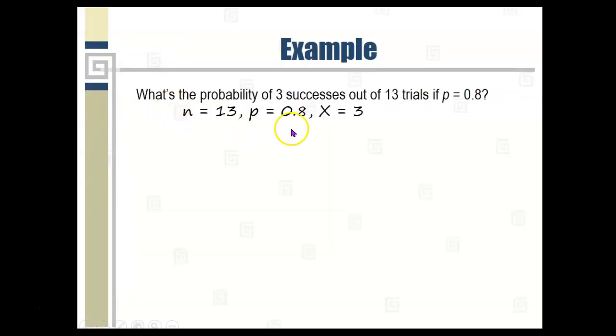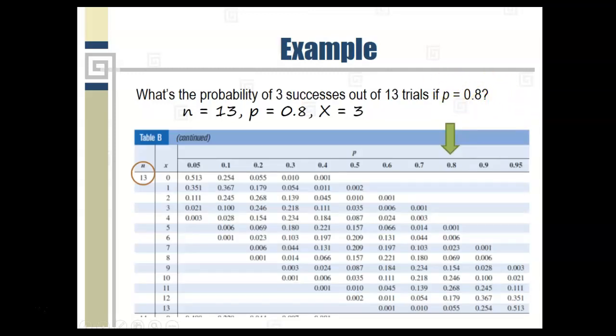Next question. What's the probability of three successes out of 13 trials if P is 0.8? Let's go back to the table. N is 13, P is 0.8, X is 3, and we look over on the table and there's this blank spot there. What does that mean? Why is that part of the table blank? Well, that means that the probability is essentially 0. It's not exactly 0 but it's so small that if you rounded it to three places after the decimal point, the way all these numbers in the table are, then it would round to 0.000. So, that probability is so small that it is 0 if you just round to the nearest thousandth, to three places after the decimal point.